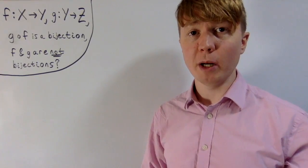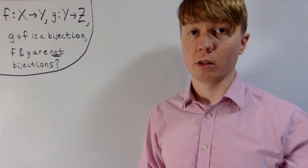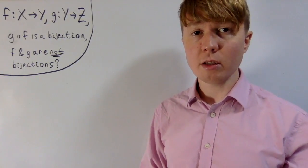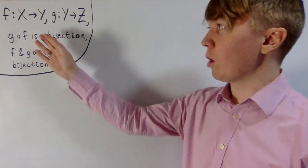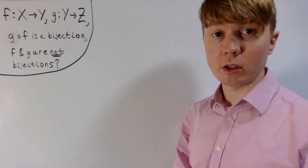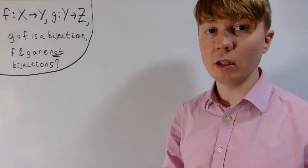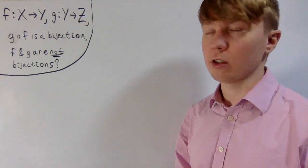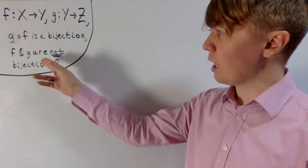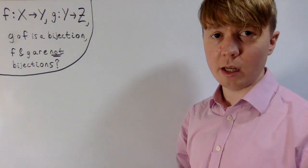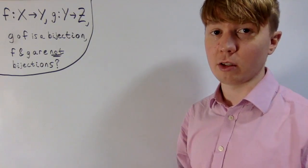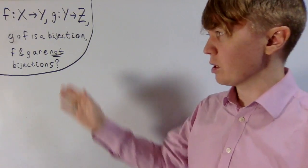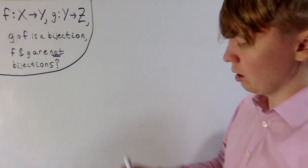We're going to test our intuition about bijections by looking at this problem: if you've got two functions f and g, and their composition is a bijection, does this mean that f and g themselves have to be bijections? Is it possible that they're not?